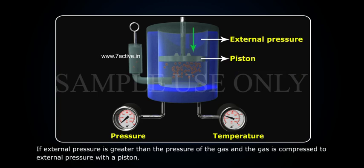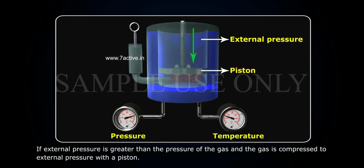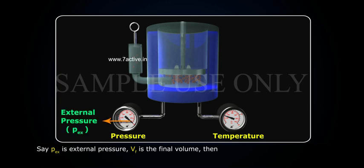If external pressure is greater than the pressure of the gas and the gas is compressed to external pressure with a piston. Say, PEX is external pressure, VF is the final volume.